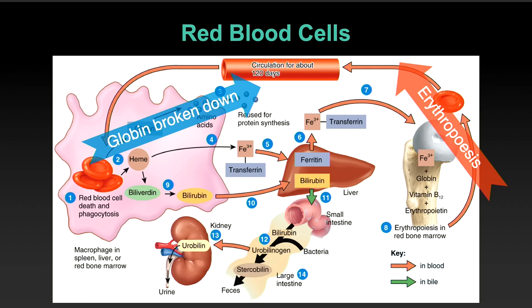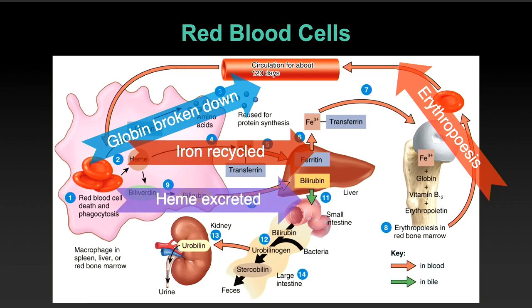Globin itself is broken down — the alpha and beta globin proteins are chopped up, and the amino acids are released to be reused in other parts of the body. That leaves heme and iron. Iron can be recycled — it has its own entire metabolic pathway and is reused for the production of new red blood cells. Heme can be broken down and excreted through the feces or urine via the bile ducts. We make heme anew in the production of new red blood cells.